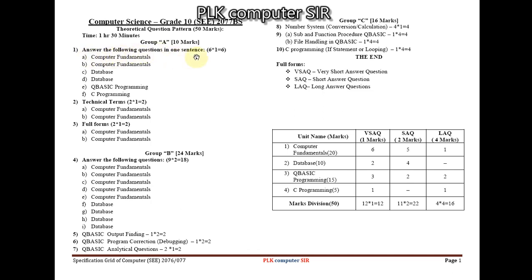In Group A, Question 1 asks you to answer in one sentence: 6 questions × 1 mark = 6 marks. There are 2 questions from Computer Fundamentals, 2 from Database, 1 from Q Basic programming, and 1 from C programming — totaling 6 questions × 1 mark = 6 marks. Question 2 is technical terms: 2 questions × 1 mark = 2 marks, both from Computer Fundamentals.